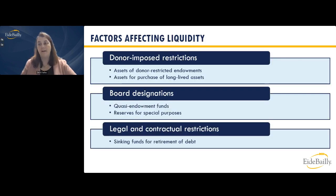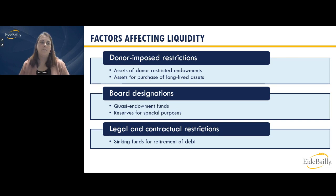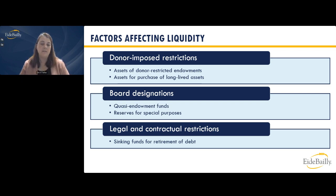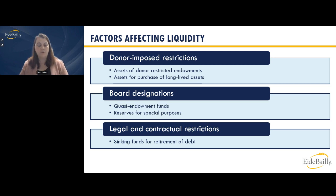A couple of factors that affect liquidity are: donor-imposed restrictions — such as a restricted endowment or assets donated for the purchase of long-lived assets — board designations like quasi-endowments or reserves for special purposes, and legal and contractual restrictions, usually a retirement sinking fund for the retirement of debt. Make sure you have a clear understanding of all restrictions and designations as you split different types of assets into those restricted or contractually restricted items.